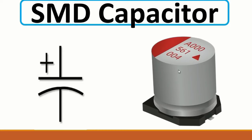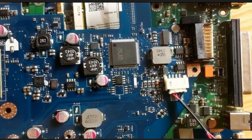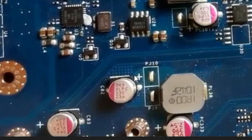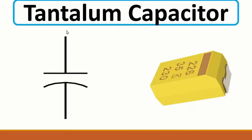This capacitor has a plus and minus - it is a polarized capacitor. The colored stripe indicates the negative terminal and the other side is the positive terminal. We call it an electrolytic capacitor. As you can see on the motherboard, we have electrolytic capacitors - the marked part is the positive terminal and the other is negative. Then we have the tantalum capacitor, which is also a polarized capacitor.